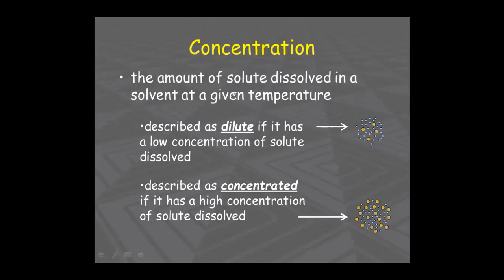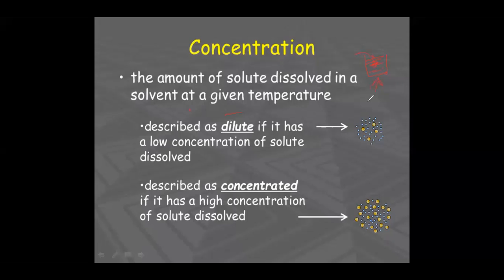At normal temperature, suppose you take one glass of water and dissolve sugar into it until it stops dissolving — no more can dissolve. To increase solubility further, you can heat the solution. If you heat it, you can add more sugar. This brings us to the terms dilute and concentrated.